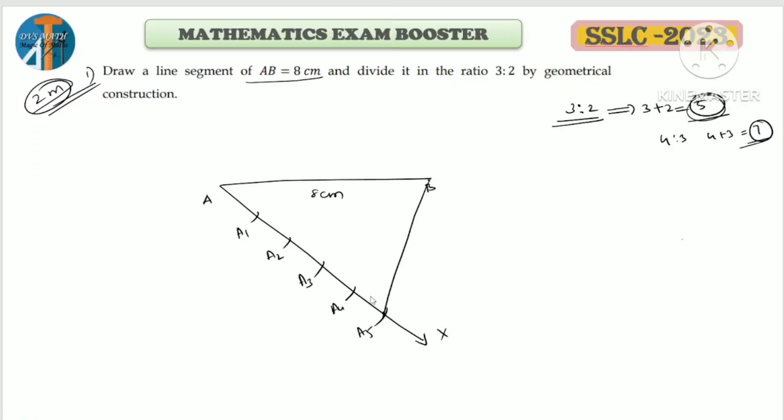Now construct a parallel line to A5B. At the end of the first ratio - here we have 3 parts (1, 2, 3) for the 3:2 ratio - you'll work from A3. Using a protractor, cut an arc and draw a parallel line. You can label this point C.